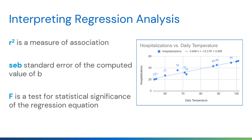SEB is the standard error of the computed value of beta, which is important to include. F is a test for statistical significance of the regression equation — if you want to know whether to reject the null hypothesis, you need to find the F statistic in your output. That concludes this basic overview of correlation and regression. It's important to actually do this work, and note that multivariate regression with categorical variables becomes more complicated than what's shown in Google Sheets or Excel.